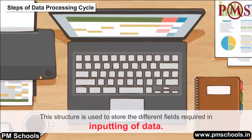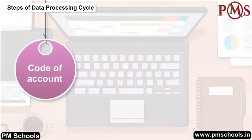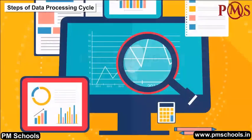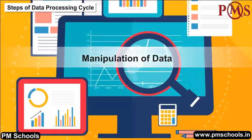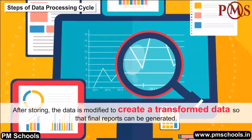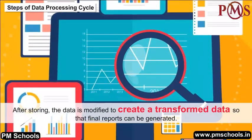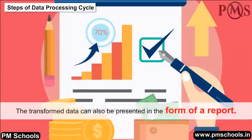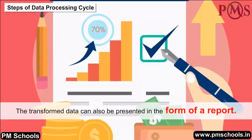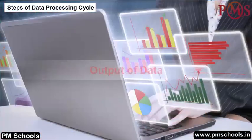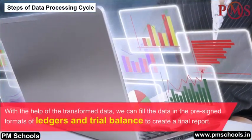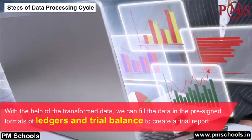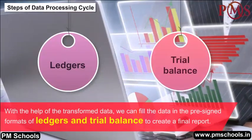Fields in data storage include the code of account, name of account, and the category type to which it belongs. Manipulation of Data: After storing, the data is modified to create transformed data so that final reports can be generated. The transformed data can also be presented in the form of a report. Output of Data: With the help of transformed data, we can fill data in pre-designed formats of ledgers and trial balance to create a final report.